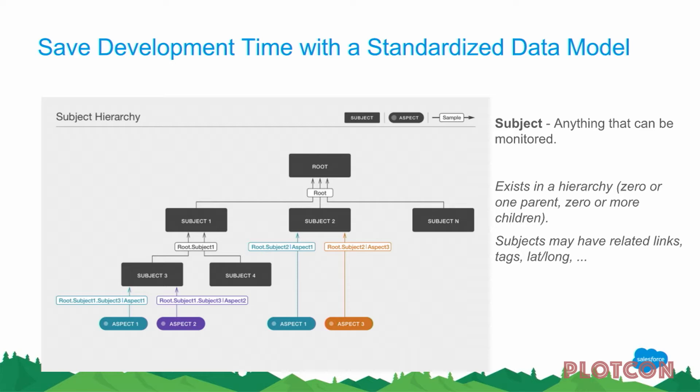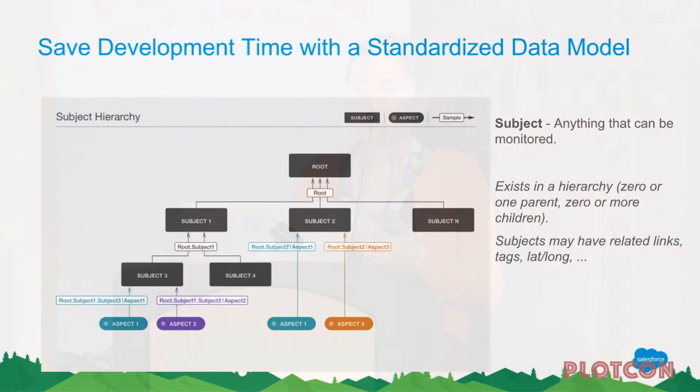One thing that differentiates Refocus from off-the-shelf monitoring software is that we have our own API which maps to a standardized data model. This is really important because we allow you to develop lenses on top of Refocus, and this standardized data model makes lenses — which are data visualizations — reusable across different data sets. The subject is the system under monitor. Subjects in Refocus are hierarchical, which makes sense when you're monitoring systems that are subsystems of other systems. For example, if you want to monitor all airports in the United States, the subject root would be US, its children would be different states, their children different cities, and their children different airports.